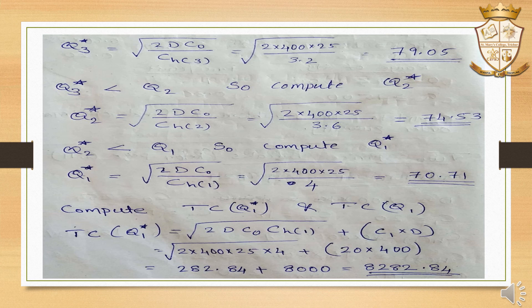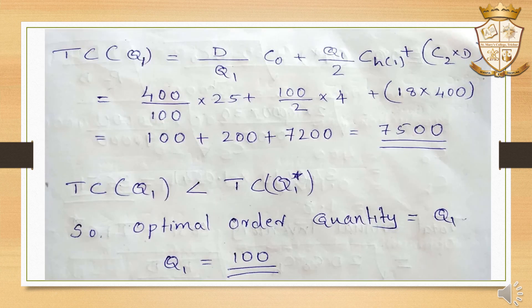Since Q1 star = 70.71 is less than Q1 = 100, we calculate TC(Q1 star) = root(2·D·CO·CH1) + C1·D = 8282.84, and TC(Q1) = (D/Q1)·CO + (Q1/2)·CH1 + C2·D = 7500. Since TC(Q1) is less than TC(Q1 star), the optimal order quantity is Q1 = 100 units.